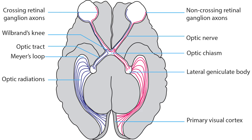The result of this rerouting is that visual information reaching the retrochiasmal portion of the retinocortical segment has been sorted into left and right hemifields. In other words, visual information from the right hemifield is carried to the left cerebral hemisphere, and visual information from the left visual hemifield is carried to the right cerebral hemisphere.